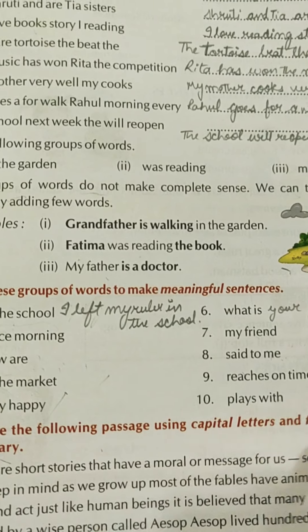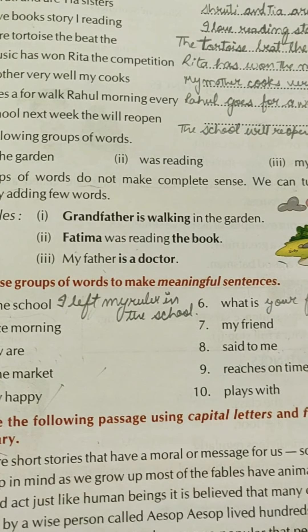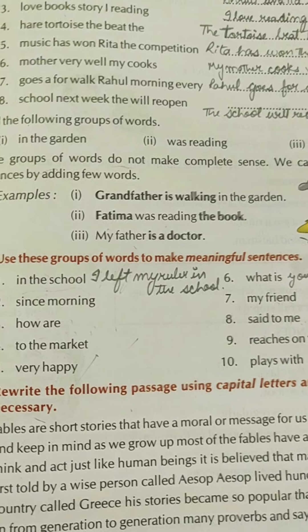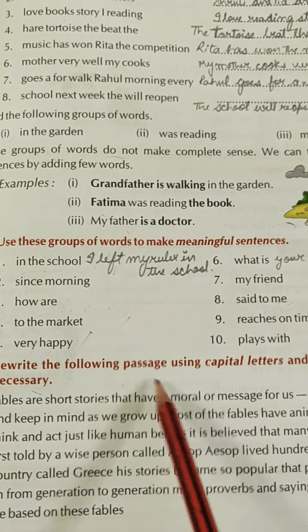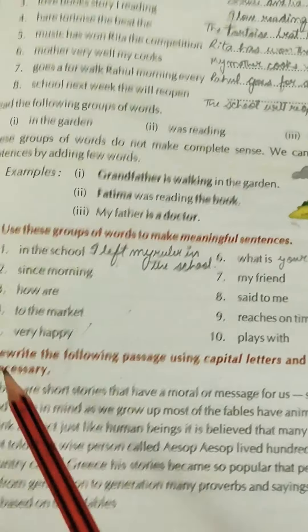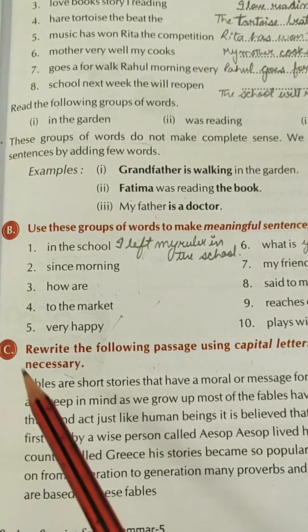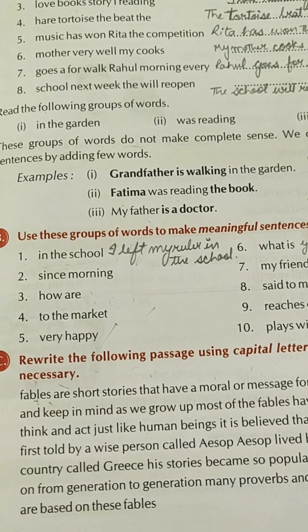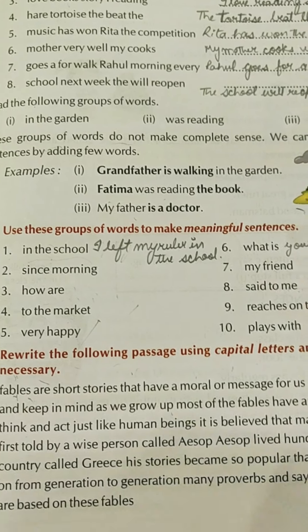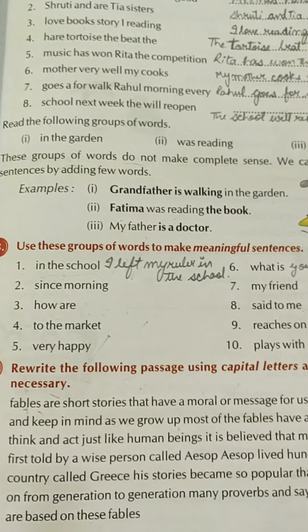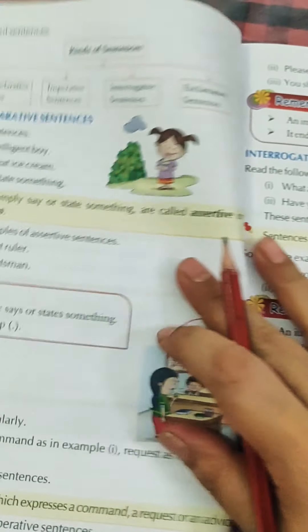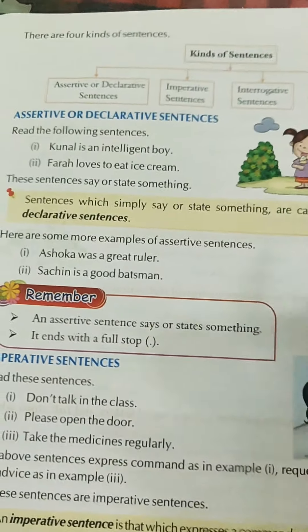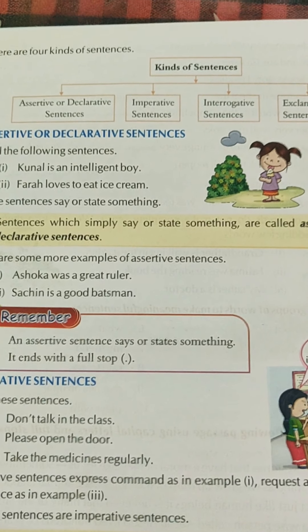Share a picture of the page on which you have done your work so that I can correct you. The next exercise asks you to rewrite the following passage using capital letters and full stops where necessary — every sentence must start with a capital letter and use correct punctuation marks. Try this question on your own. Moving forward, we are now going to study the kinds of sentences.